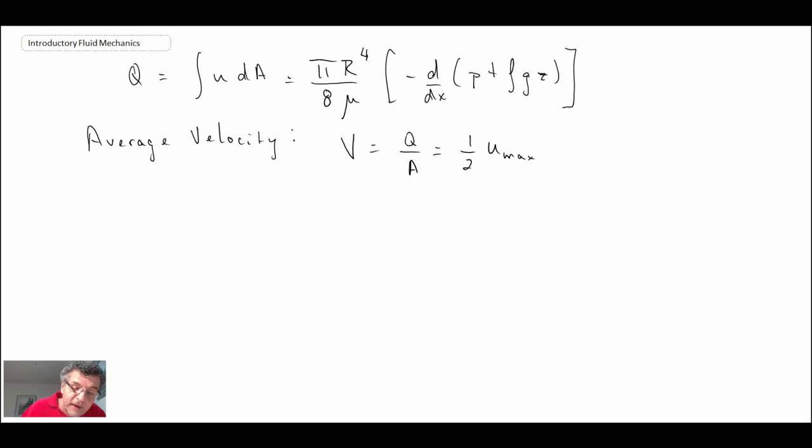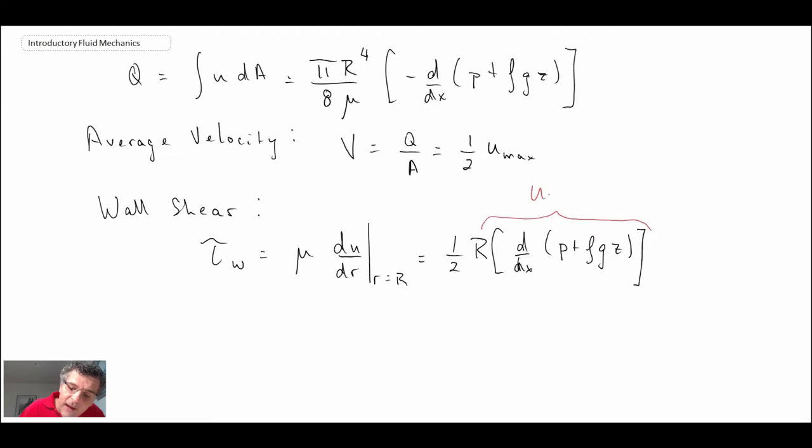Other things we can write out, wall shear. And the reason why we are interested in wall shear is because tau was the thing that enables us to determine the friction factor. And so let's take a look at that and see where we can go with it. Now what I am going to do, the term in here, I am going to go back to the U max and we are going to make a substitution from the U max expression. So that gives us an expression for tau on the wall.